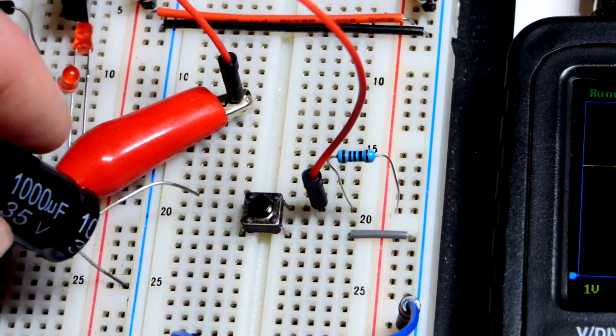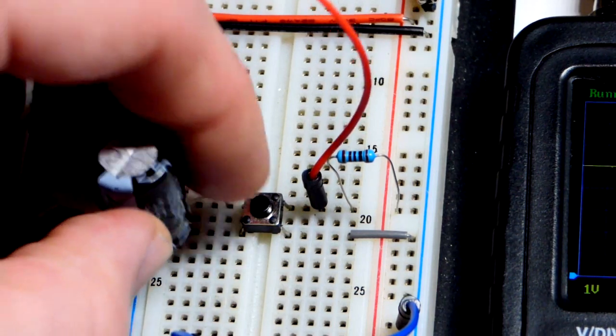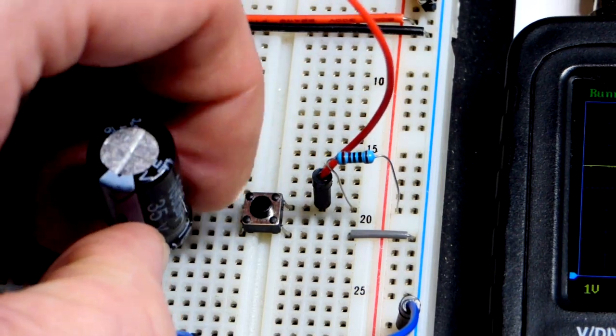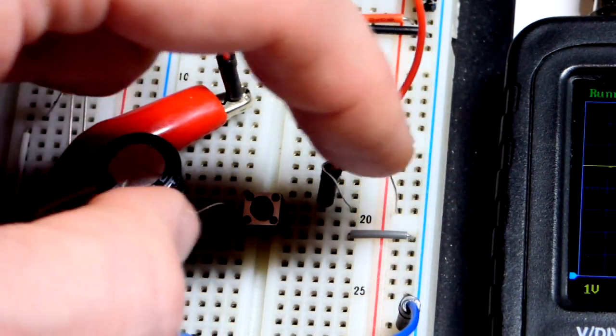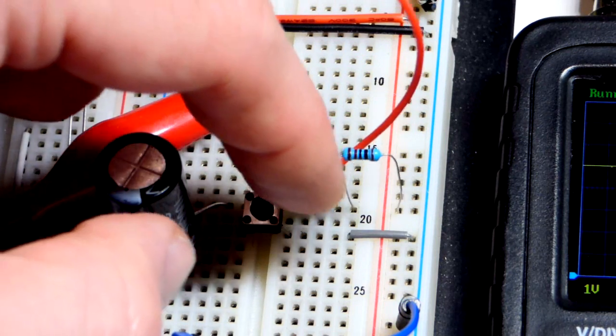There you can see we have the resistor from the positive side of the supply right there. So the capacitor naturally charges.